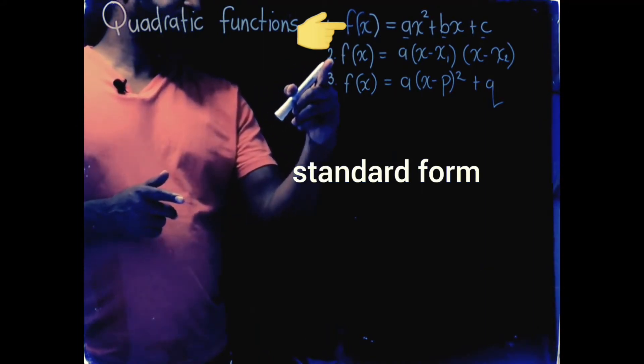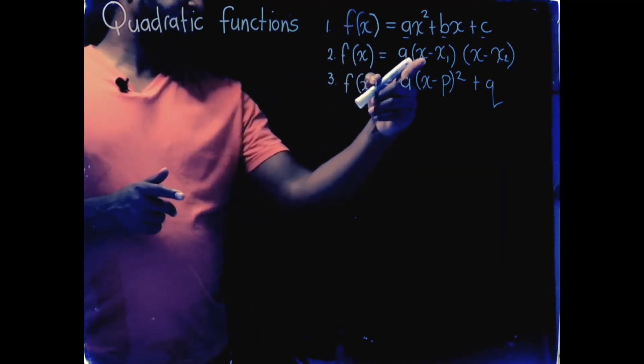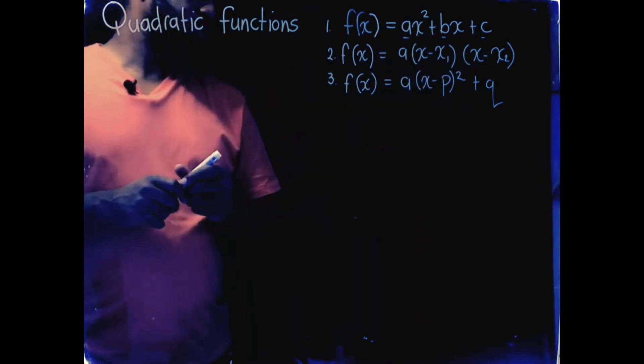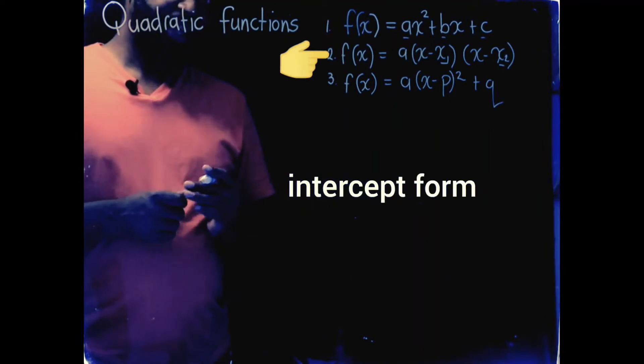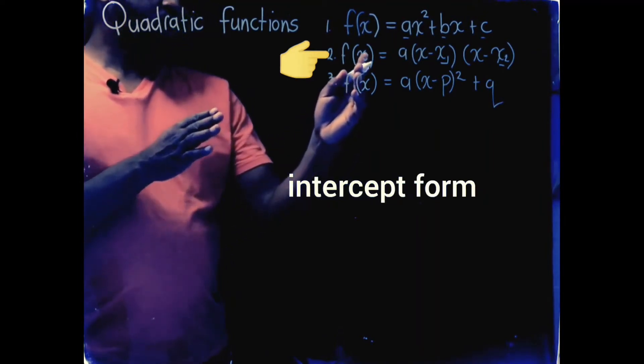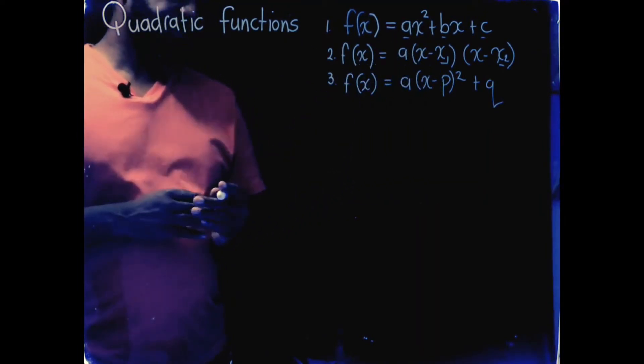The second format says f of x equals a into x minus x1, x minus x2, where these x1 and x2 values are the x intercepts, where the graph cuts the x axis.